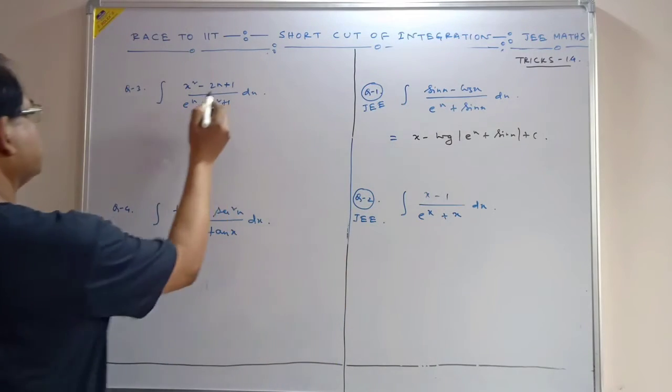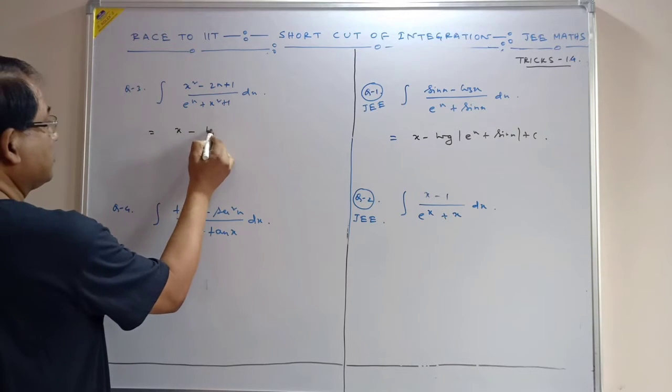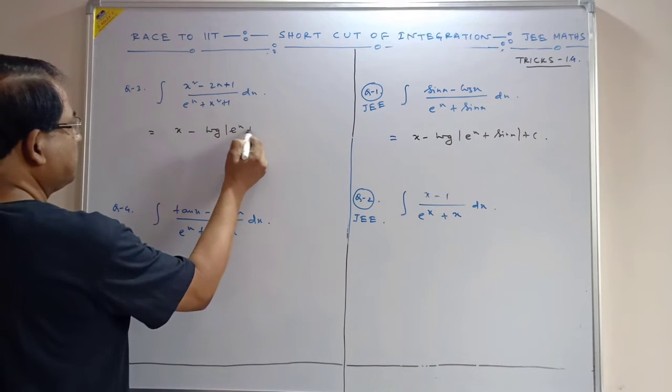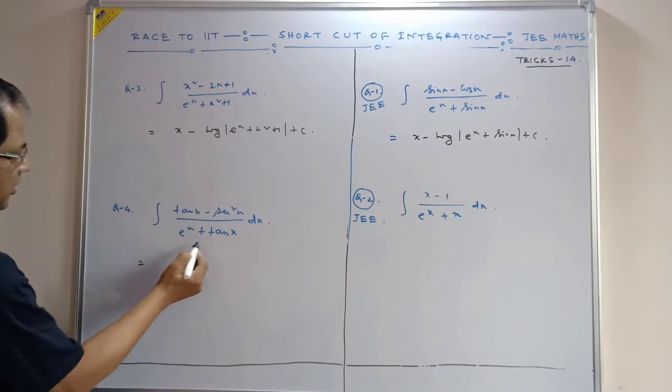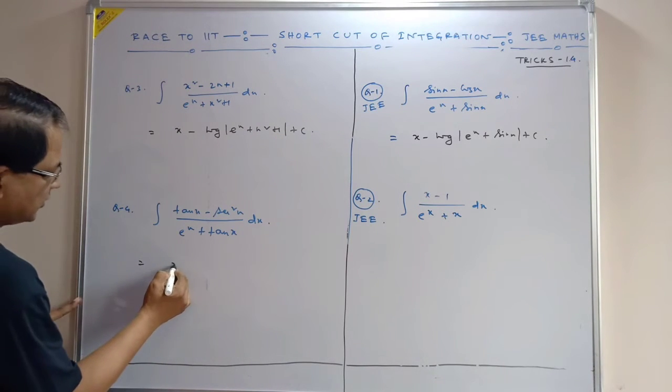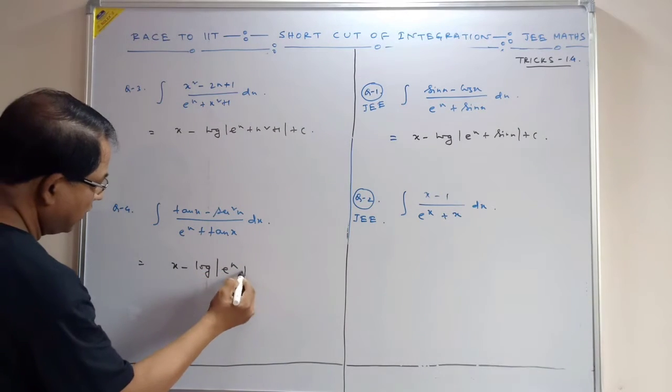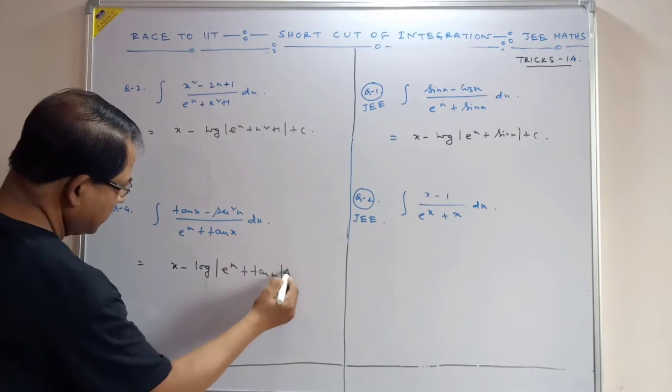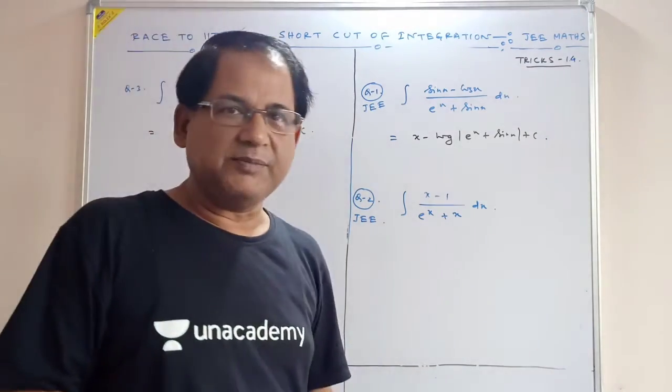Here your question is x minus log of e to the power x plus x squared plus one plus c. Here your question is x minus log of e to the power x plus tan x plus c.